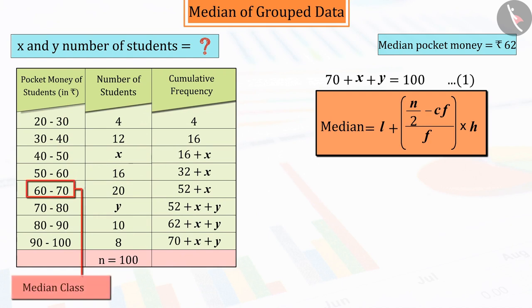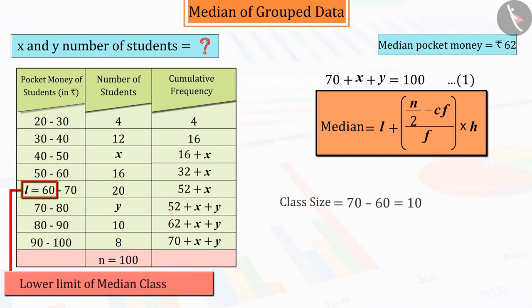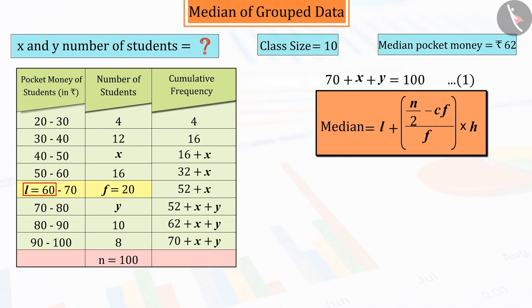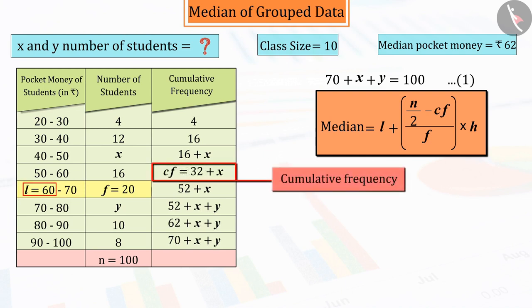Its median class is 60 to 70 because 62 belongs to this class whose lower limit is 60, class size is 10, frequency is 20, and the total number of students is 100. And we also know that the cumulative frequency of the class just before the median class is cf whose value is 32 plus x.